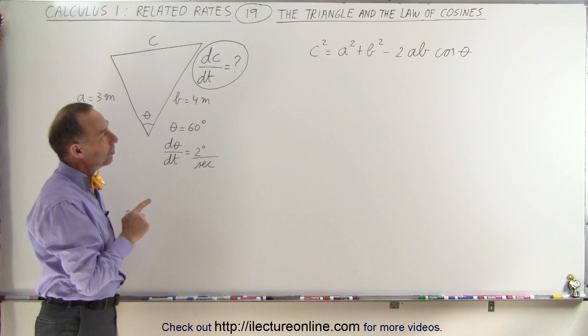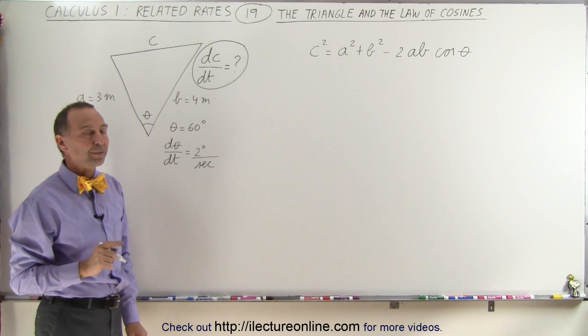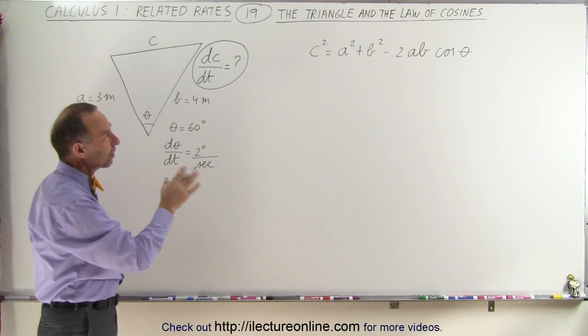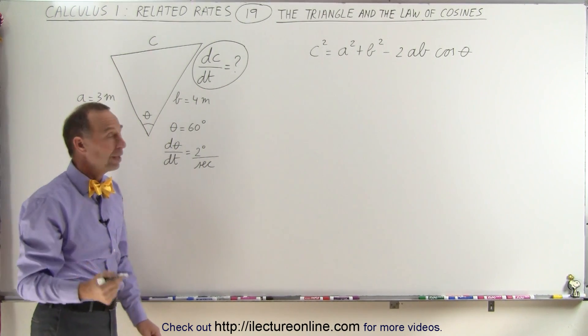A and B remain constant, but C is changing and theta is changing, which means if we take the derivative with respect to time of both sides of the equation, we should be able to solve for dC/dt. So let's go ahead and do that.